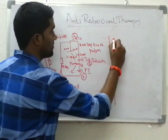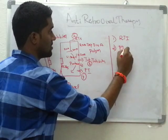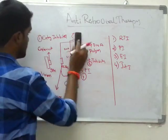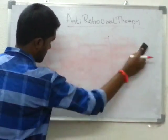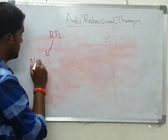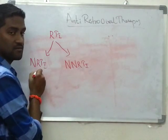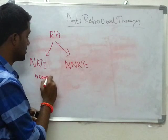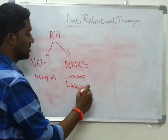For our purpose, the first group is reverse transcriptase inhibitors, second will be protease inhibitors, then entry inhibitors, and finally integrase inhibitors. Reverse transcriptase inhibitors are again divided into nucleoside reverse transcriptase inhibitors (NRTI) and non-nucleoside reverse transcriptase inhibitors (NNRTI). NRTIs are similar to the genetic material of the virion, while NNRTIs are dissimilar. NRTIs work through competitive inhibition, while NNRTIs work through non-competitive inhibition, binding to an allosteric site.